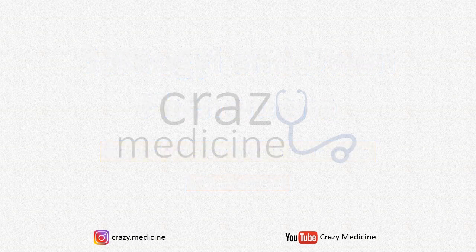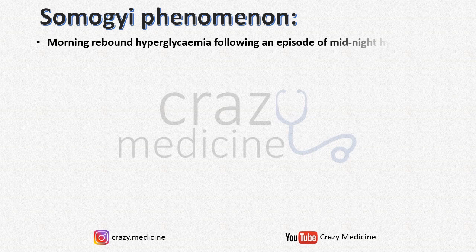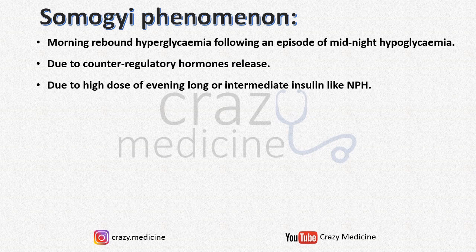Firstly, Somogyi phenomenon. It is morning rebound hyperglycemia following an episode of hypoglycemia during midnight. It occurs due to release of counter-regulatory hormones, and it is most commonly due to a high dose of evening long or intermediate insulin, like NPH.